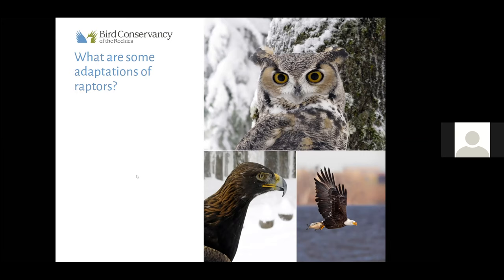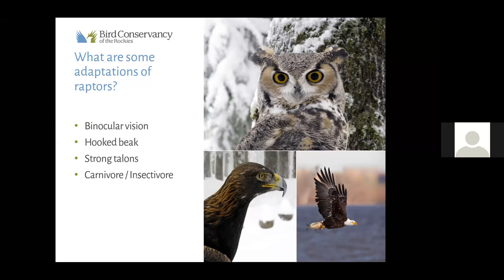Binocular vision — 'bino' means two. Raptors have two eyes with overlapping fields of view, which allows for good depth perception. They have really good eyesight so when they're soaring up high scanning for prey below, they can dive down accurately. You might have also heard the phrase 'eyes in the front hunt, eyes on the side hide.' The great horned owl pictured is staring right at us, showing that perfect example.